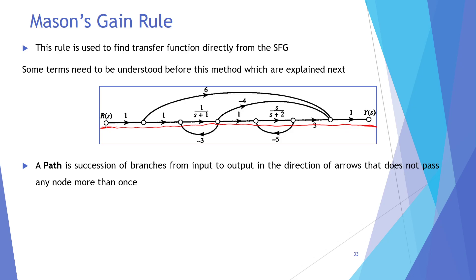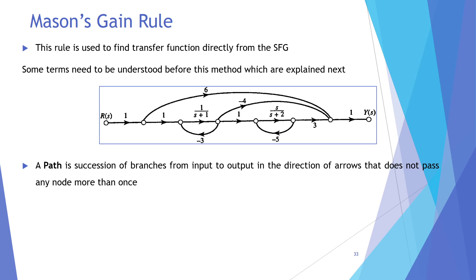To reach the output signal, in the direction of arrows chalna must hai aur kisi bhi jagah pe aap ek se zyada dafa wapis nahi jaenge. For example, if I talk about R(s), then this point on this node is a signal, moving in this direction, and this node is the output — so one path is here.